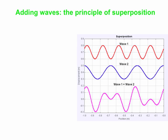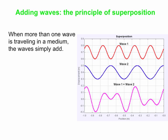Interference basically comes down to superposition. When you have more than one wave traveling in a medium, the waves simply add together. The picture here shows two waves — wave 1 in red and wave 2 in blue — and together they combine to form the purple wave at the bottom, labeled wave 1 plus wave 2. At one place, the amplitude of wave 1 plus wave 2 is zero, because you've got a trough — a negative amplitude — in wave 2 combining with a positive amplitude peak in wave 1, and they cancel out.